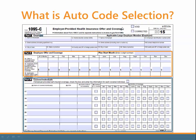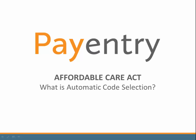So in conclusion, Automatic Code Selection helps you complete the information that you need for Part 2, the Employee Offer and Coverage section of the 1095-C form, and Part 3, the covered individuals, if you are self-insured. This concludes Pay Entry's presentation on the Affordable Care Act: What is Automatic Code Selection?